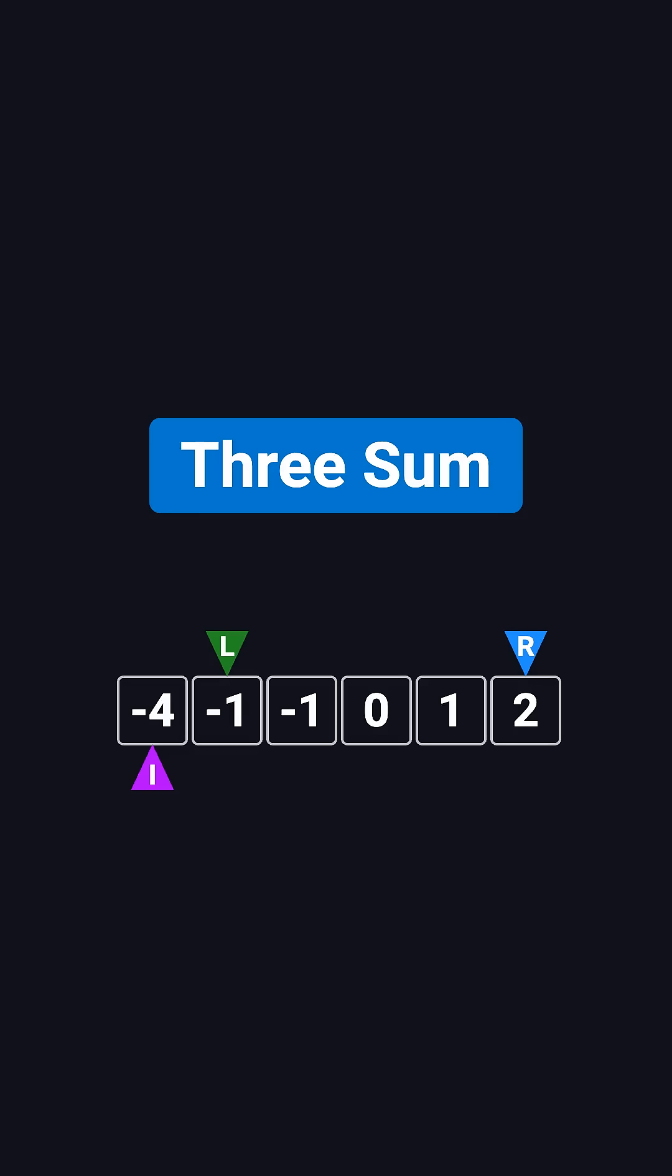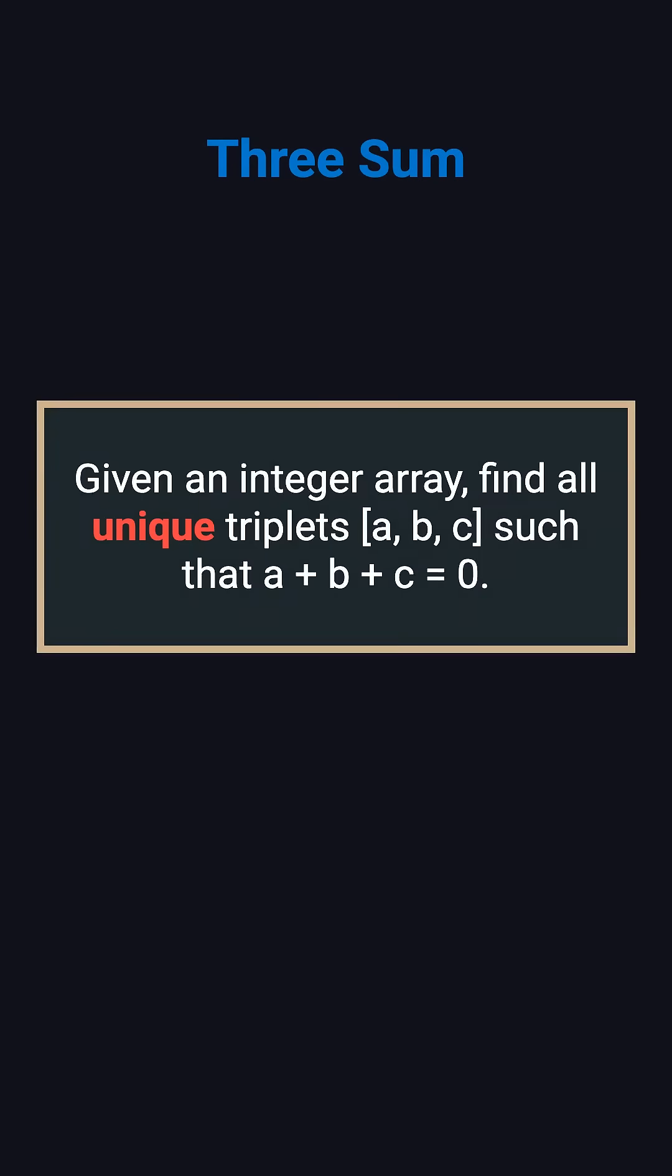Today we're going to solve a classic coding interview problem called 3-sum in just 3 minutes. The problem is simple. You're given an integer array, and your task is to find all unique triplets whose sum is 0. The key point is that the triplets must not be duplicated.